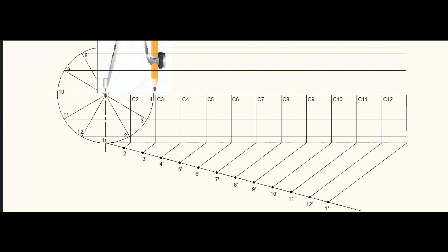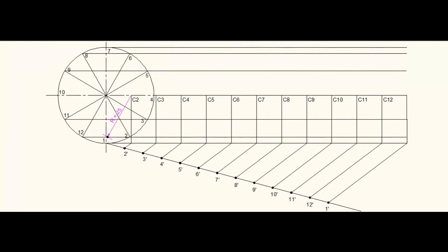Measure the radius of the generating circle. Then from each of the center locations, cut arcs on the lines projected from the corresponding points of the circle.